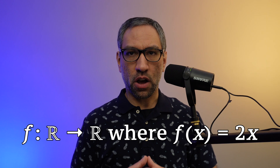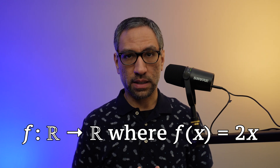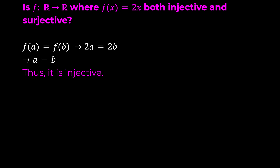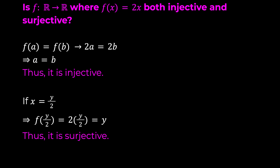Now consider the function f: ℝ → ℝ where f(x) = 2x. This function is injective because if f(a) equals f(b), then 2a equals 2b, which implies a equals b. Hence it is injective, since we have proved that if any two elements map to the same output they must be the same element. Is it surjective? If we choose y/2 as our value for x, then for every element y in the real numbers, f(y/2) equals 2·(y/2), which equals y. Thus it is surjective, and therefore, since it is both injective and surjective, it is bijective.